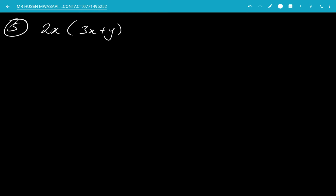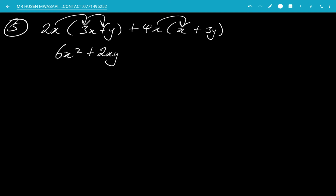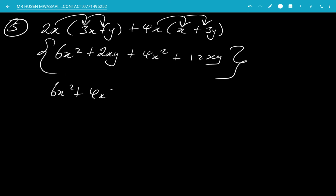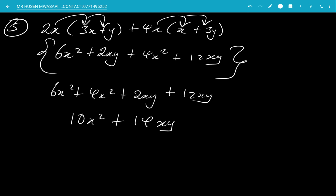Example 5 — Simplify: 2x(3x + y) + 4x(x + 3y). The 2x multiplies the first bracket: 2x times 3x is 6x squared, 2x times y is 2xy. The 4x multiplies the second bracket: 4x times x is 4x squared, 4x times 3y is 12xy. Collecting like terms: 6x squared plus 4x squared is 10x squared; 2xy plus 12xy is 14xy. Final answer: 10x² + 14xy.